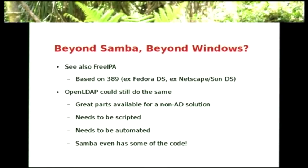Beyond Samba and beyond Windows, I would recommend you look at FreeIPA. It's developed as a fairly large stack out of Red Hat, based on 389 — which was Fedora Directory Server, was Sun Directory Server — and has had many previous names including iPlanet. A good solid directory. The FreeIPA project has done some amazing things about simple installs too — it produces a Kerberos server, an LDAP server, and a web GUI. I need to look into more about what it can and can't do, but I'm pretty impressed.